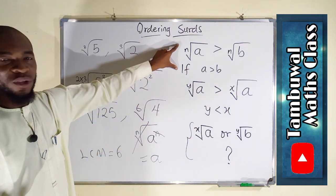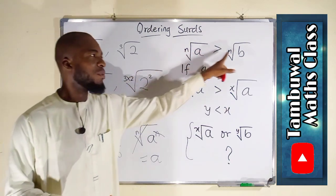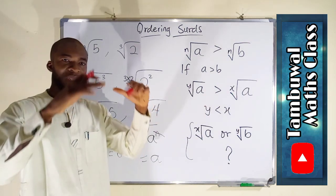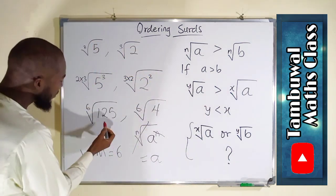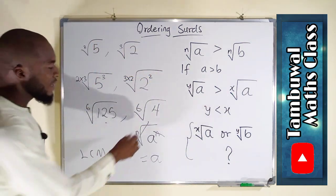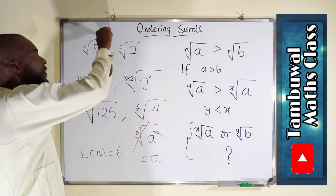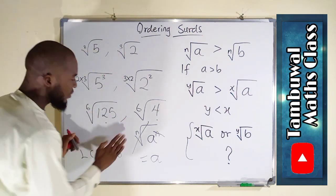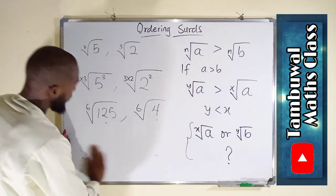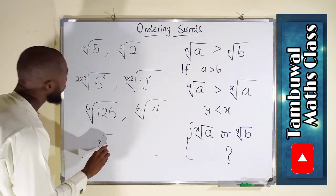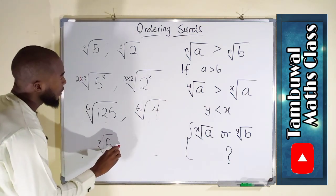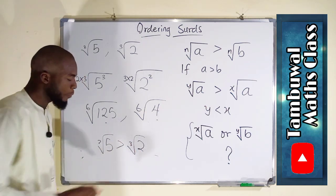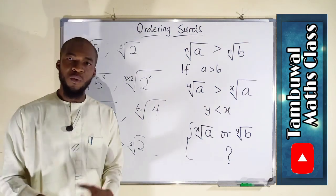Now they have the same degree 6. Applying the first condition — the higher the radicand, the greater the surd — we see that 125 is greater than 4. Therefore we conclude that square root of 5 is greater than cube root of 2.